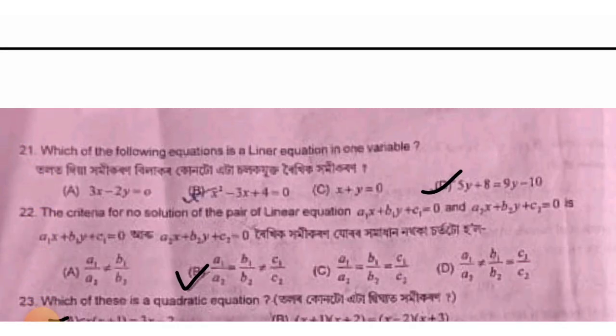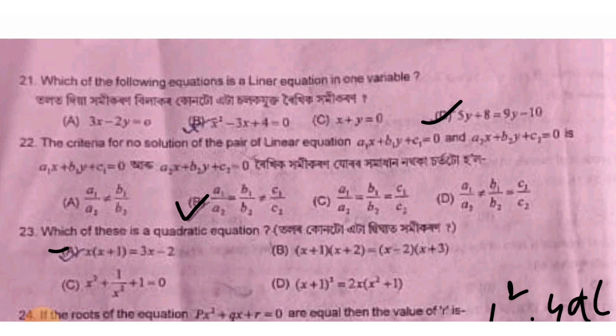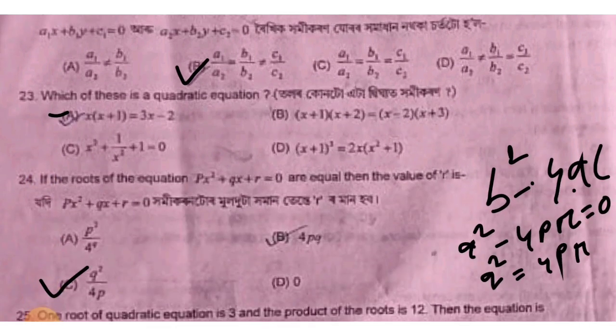Which of the following equation is a linear equation in one variable? Option D: 5y plus 8 = 9y minus 10. For two linear equations a1x plus b1y plus c1 = 0 and a2x plus b2y plus c2 = 0 to have a unique solution: a1/a2 = b1/b2 not equal to c1/c2. Option B is the answer.